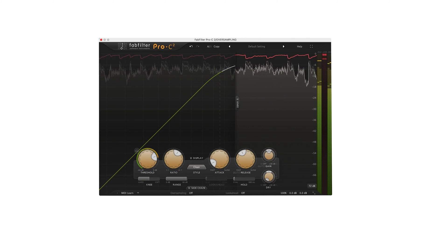So if you have a sample of 44.1 kHz and you activate two times oversampling, internally the process will get done at 88.2 kHz and after that it gets sent out again in 44.1 kHz.